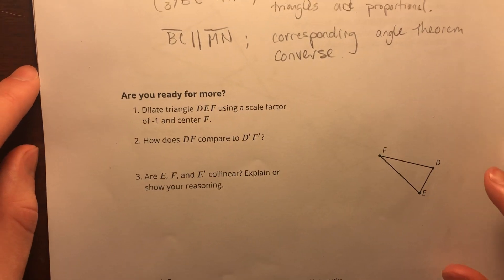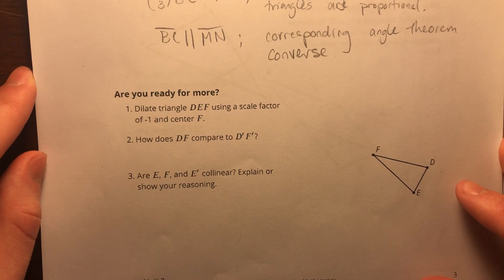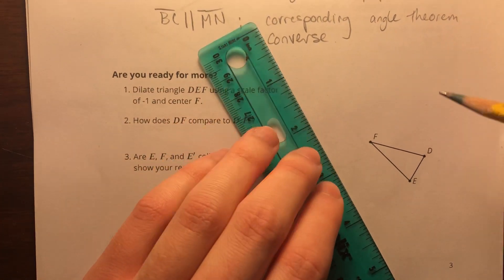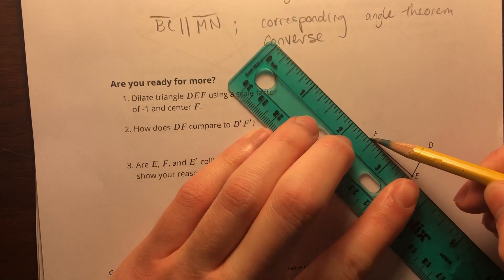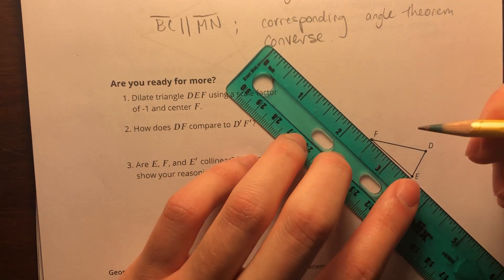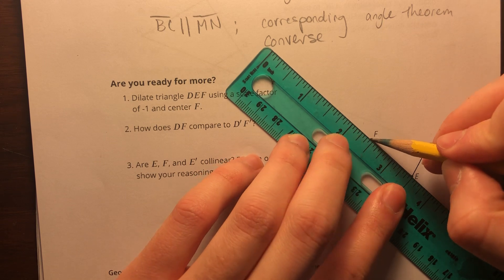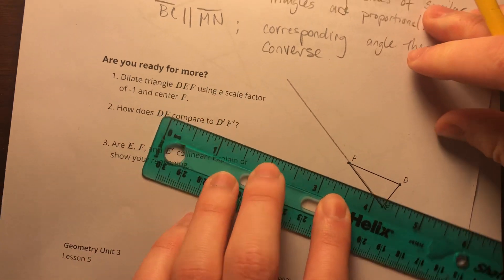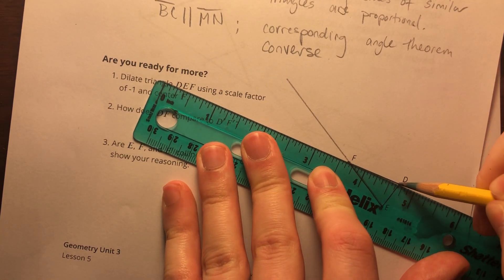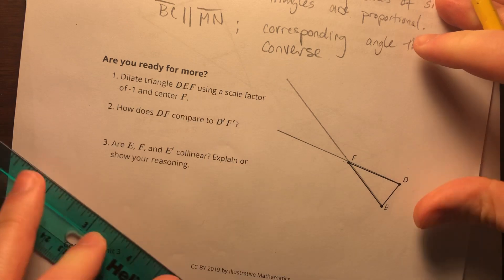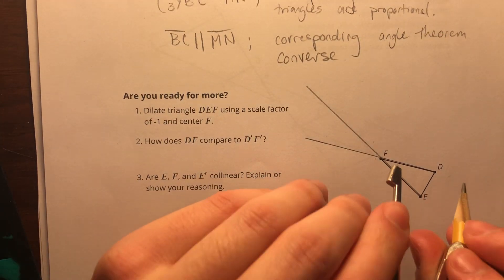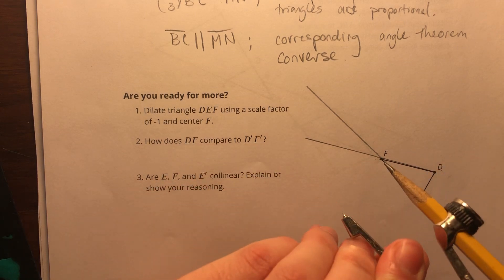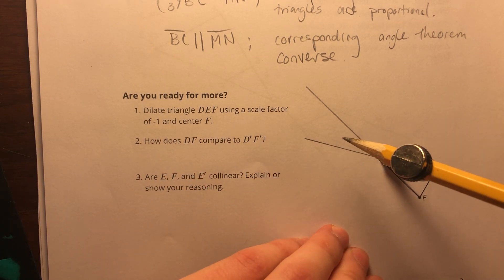Are you ready for more? Dilate triangle DEF using scale factor of negative one and center at F. Well, I know that if I were to normally dilate this, I would start at F and extend through E and then extend through D as well. But if we're doing a negative scale factor, we're going in the opposite direction. So I'm going to go through F in the opposite direction, and same thing with point D.